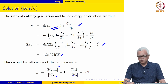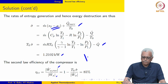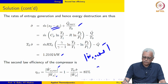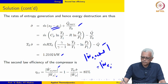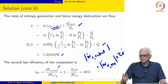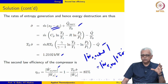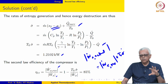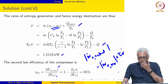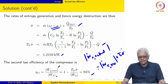We can write the second law efficiency of the compressor as the absolute value of W_x dot reversible divided by the absolute value of W_x dot. This is a power absorbing device, so the lost work is added to the reversible work to arrive at the actual work. Simplifying this expression, the second law efficiency of the compressor comes out to be 85 percent.